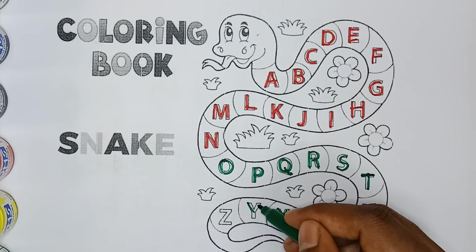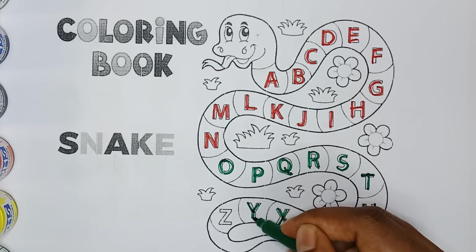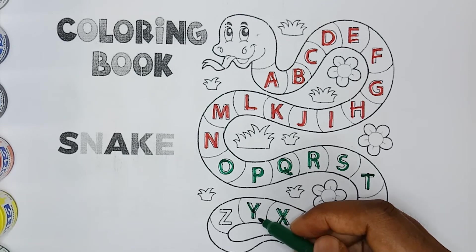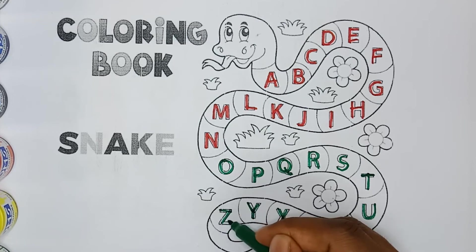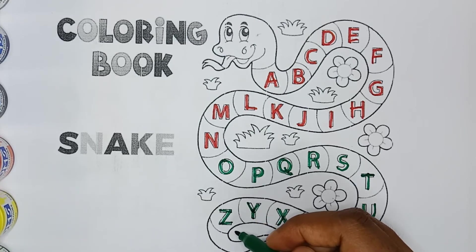Y, Y for young, green color Y. Z, Z for zebra, green color Z.